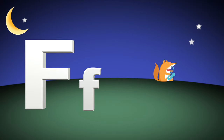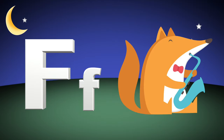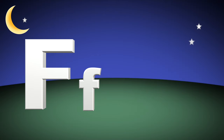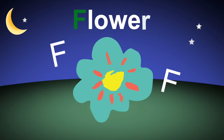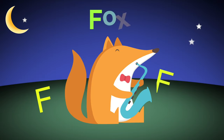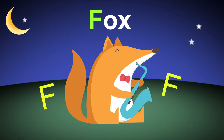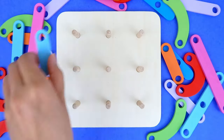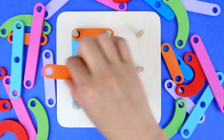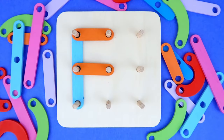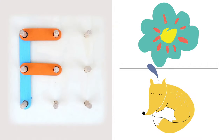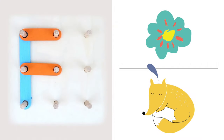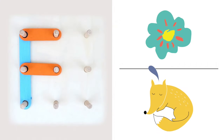F is for fox. F is for flower. f, flower, f, fox. Letter F: flower, fox.